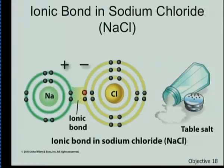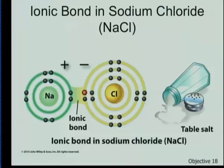An ionic bond is somewhat strong but somewhat weak between two ions — a cation and an anion. The reason I say somewhat weak is that this bond can be broken. We can get salt to dissolve in water. The sodium will orient itself by the water, and the chloride ion will orient itself by the water.